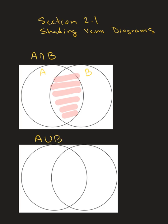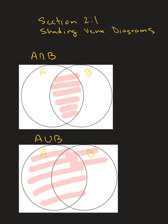Now A union B. Remember, A union B means you combine the sets together — you make one big set with the two sets joined. So here's A, here's B. I'm going to shade them both, because both A and B are in the set. First I color A, then I also color B. And that is our visual representation of A union B.